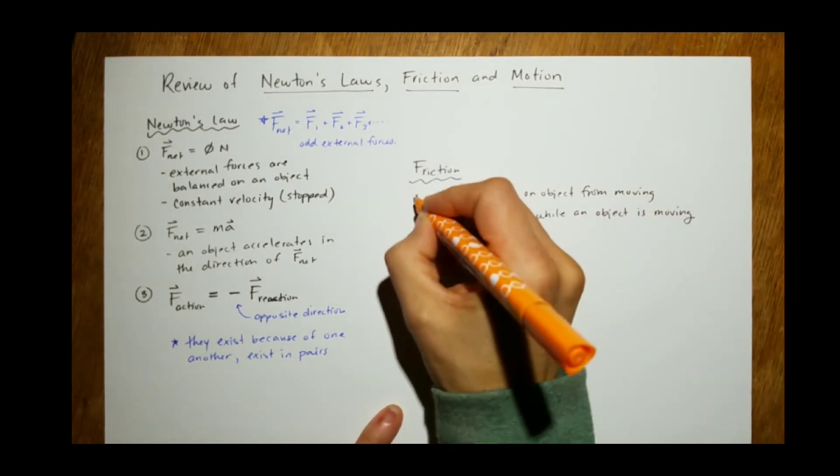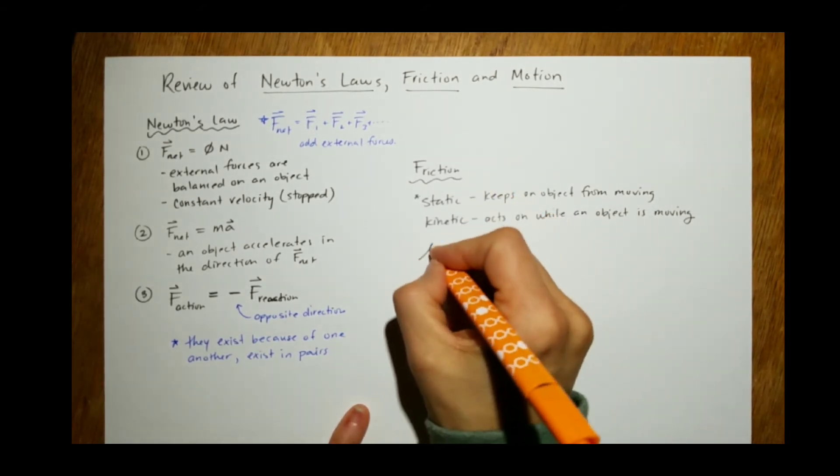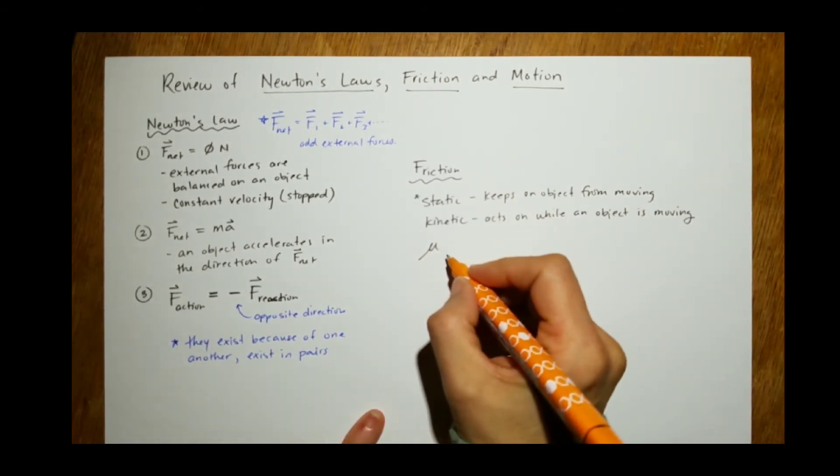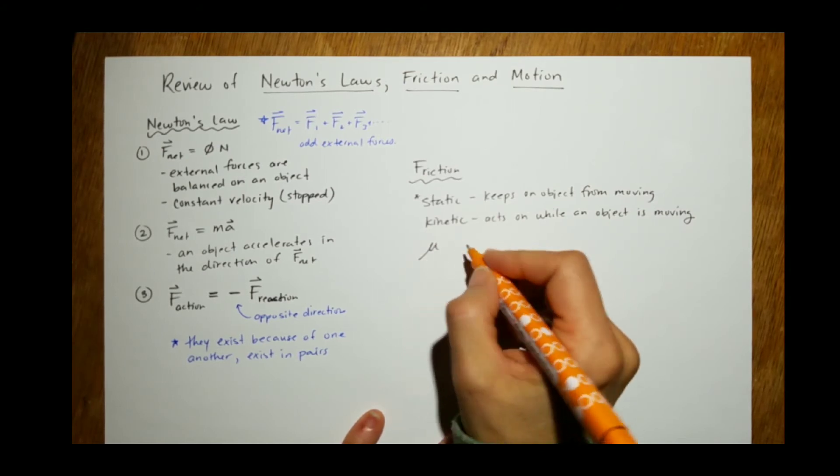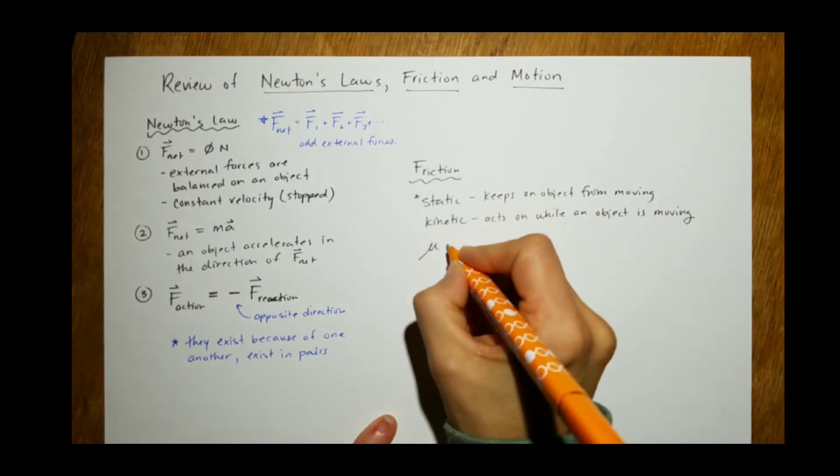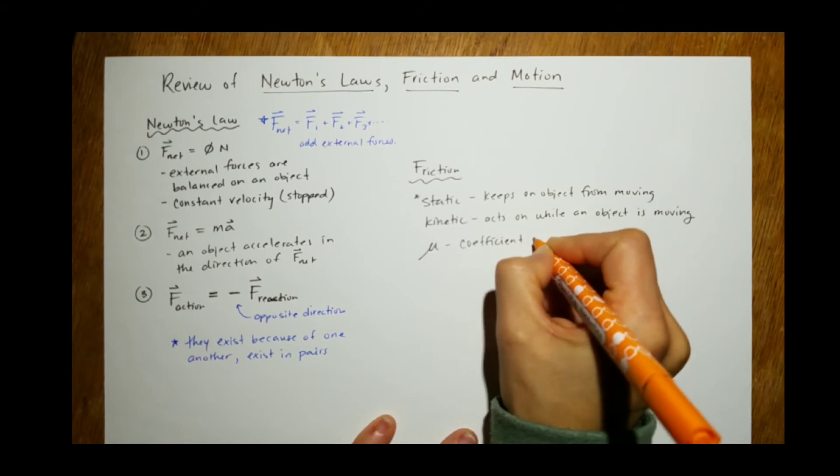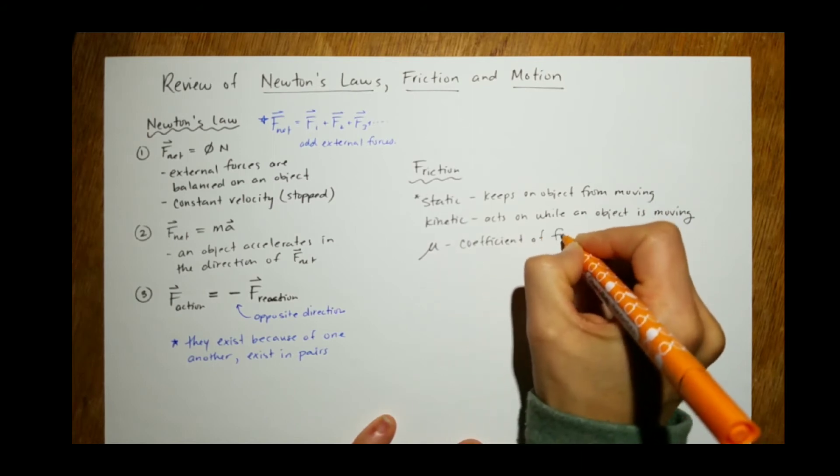And static friction is always larger than kinetic friction. For this, we have to understand this little funny Greek symbol. It's fun to write. It's mu. You say it like a kitten. Mu. This is the coefficient of friction.